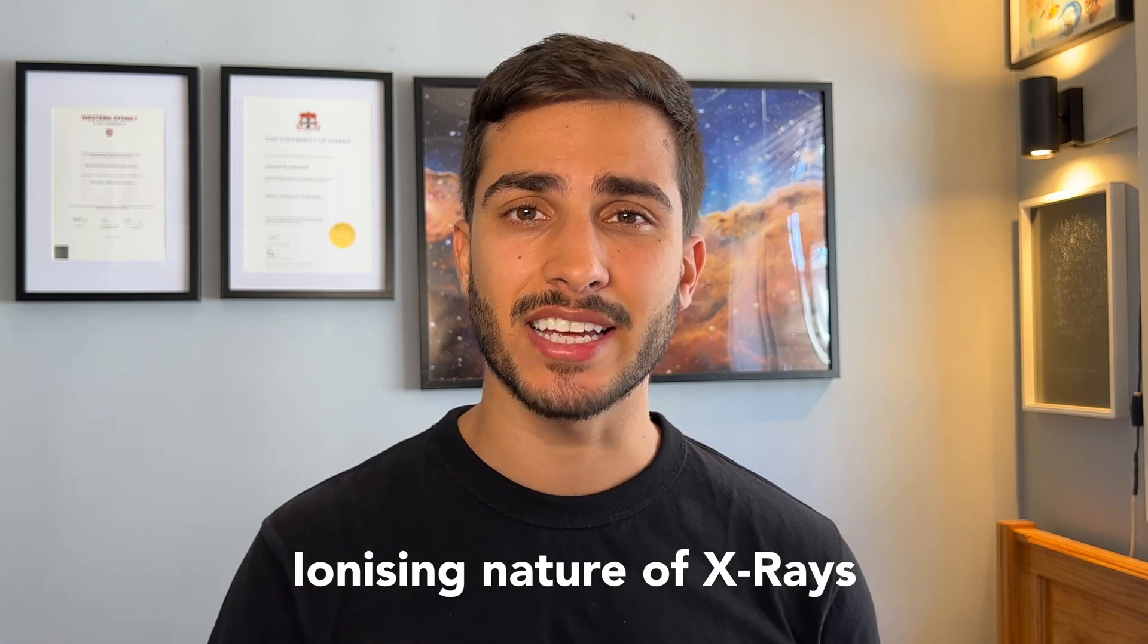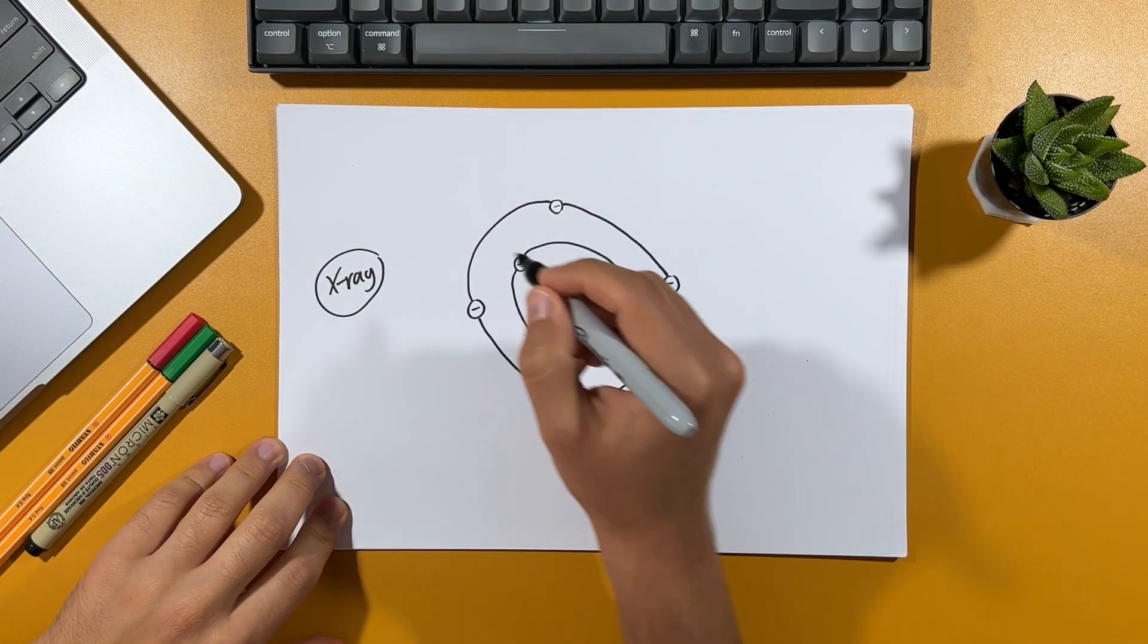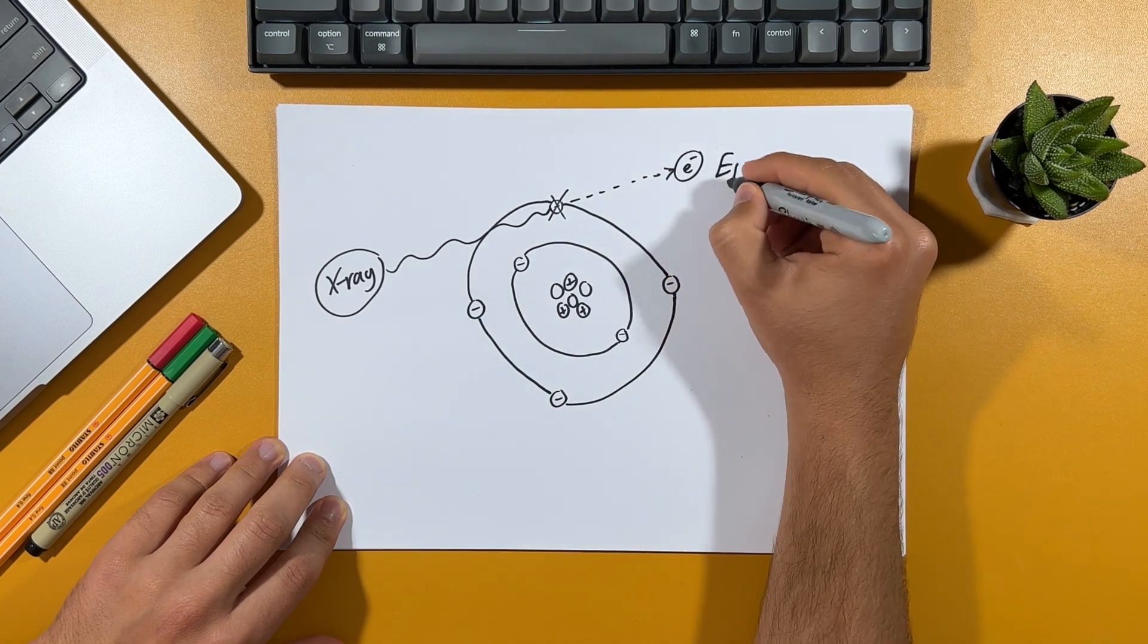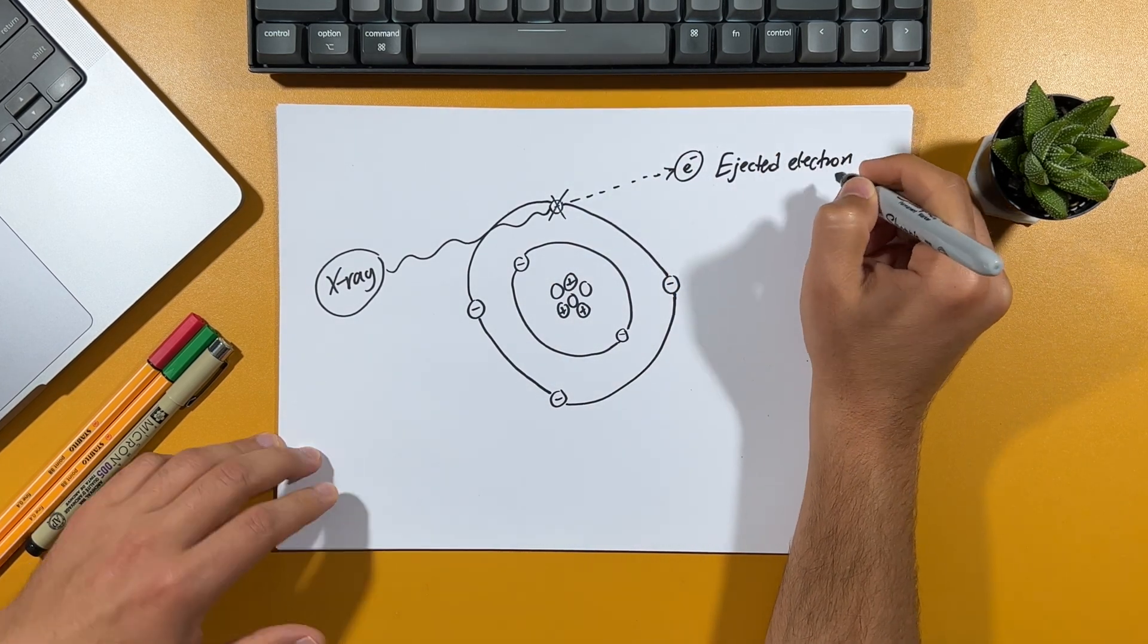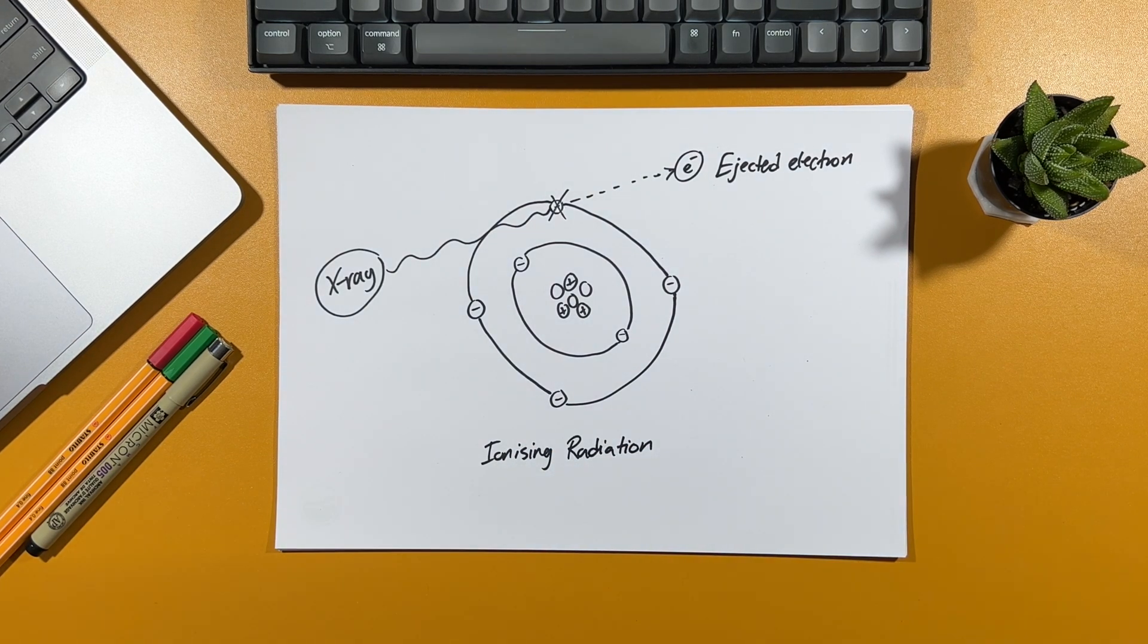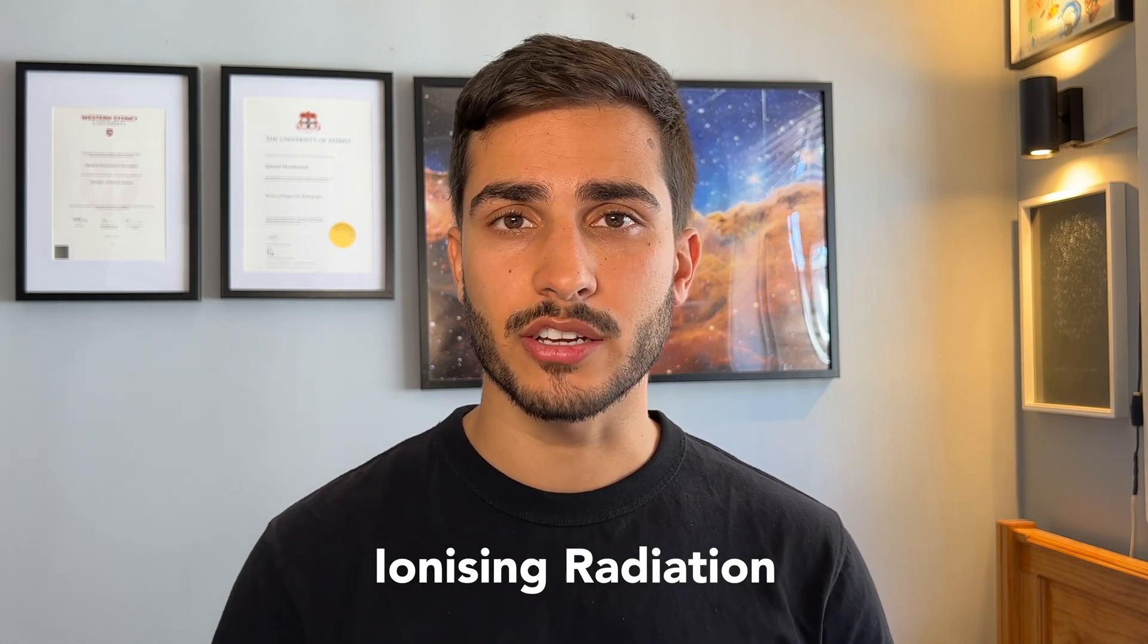One X-ray property that I haven't mentioned yet is their ionizing nature. And this refers to X-rays having enough energy that they can actually remove tightly bound electrons from atoms, resulting in the formation of what's known as an ion, which is an atom that has either lost or gained one or more electrons. This concept serves as the foundation of ionizing radiation. So ionizing radiation is any radiation that has sufficient energy to cause an ionization event. That is to knock off tightly bound electrons from atoms. And these include X-rays, gamma rays, alpha particles, beta particles and neutrons.